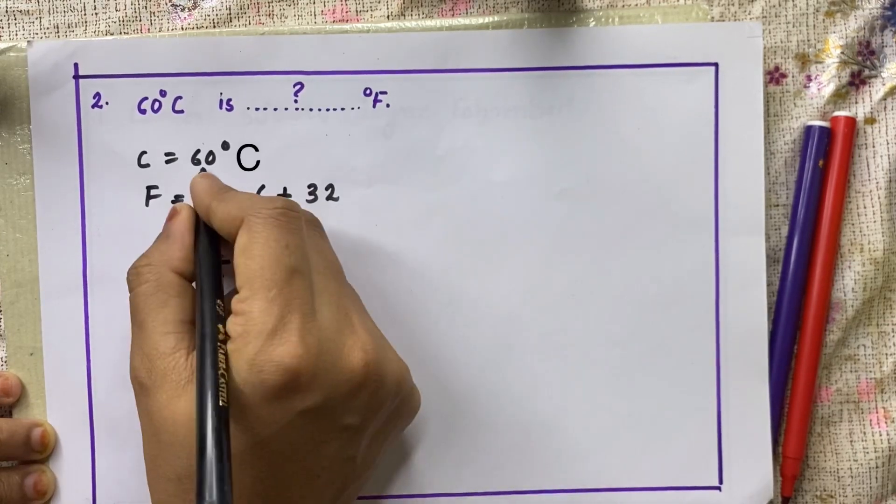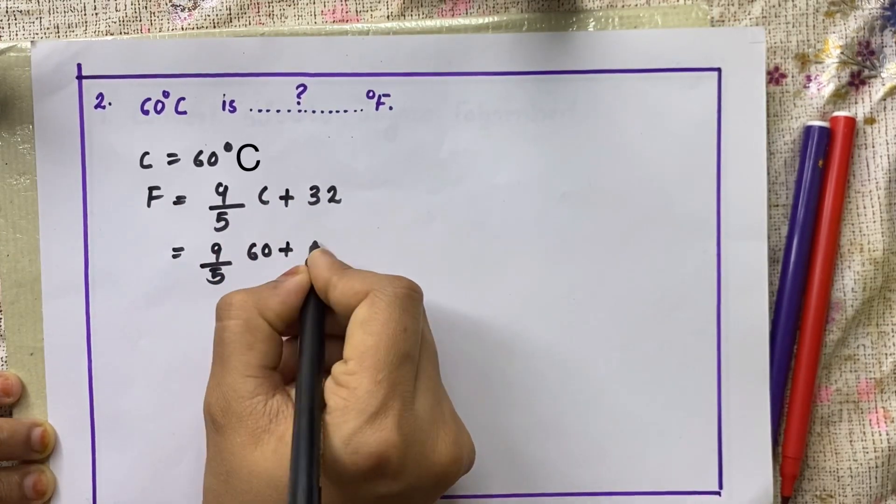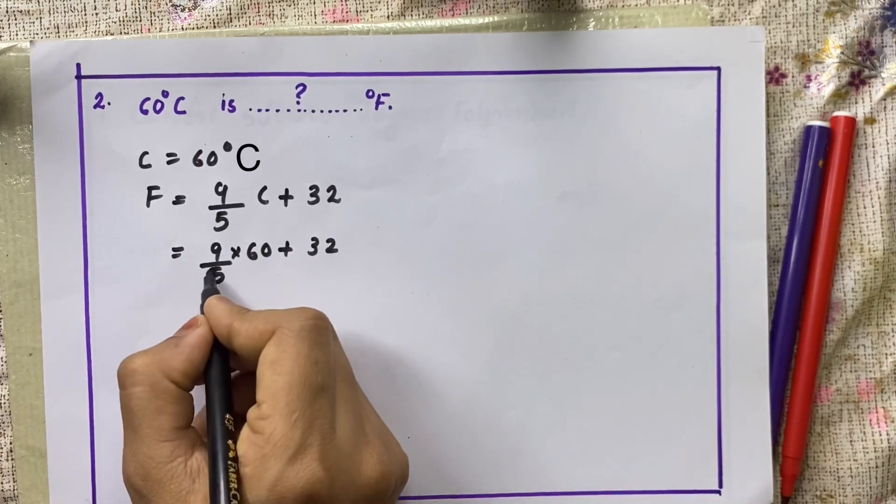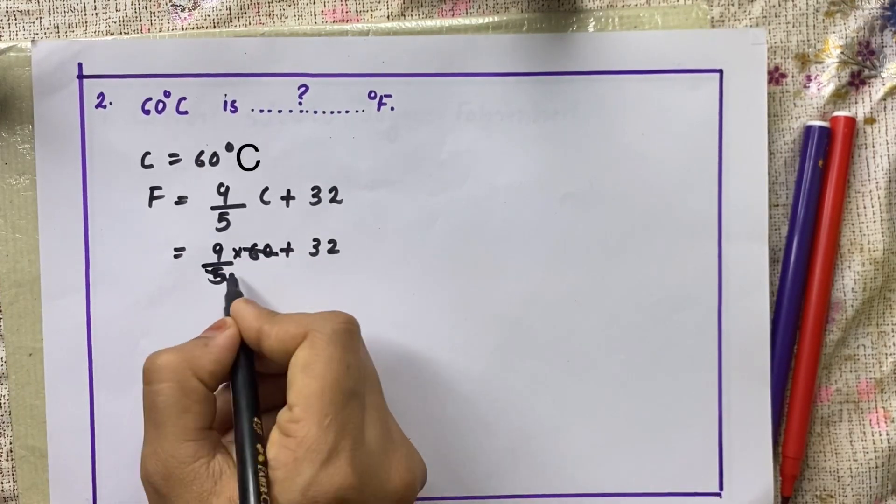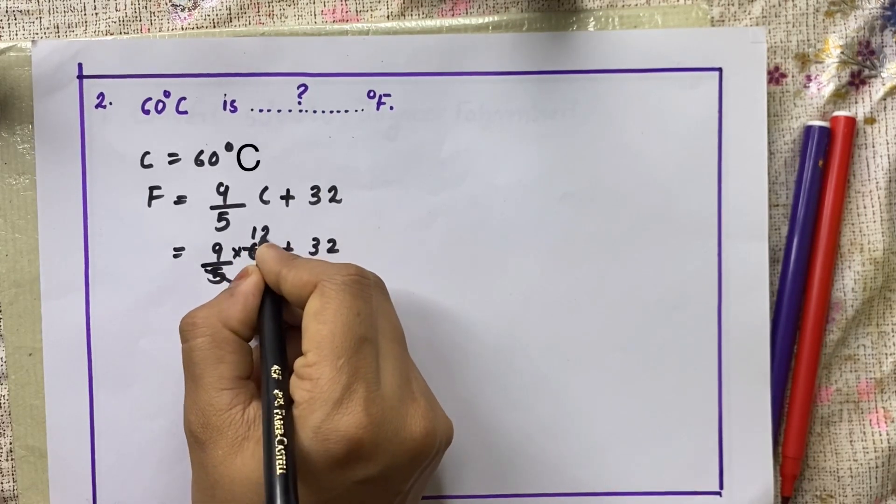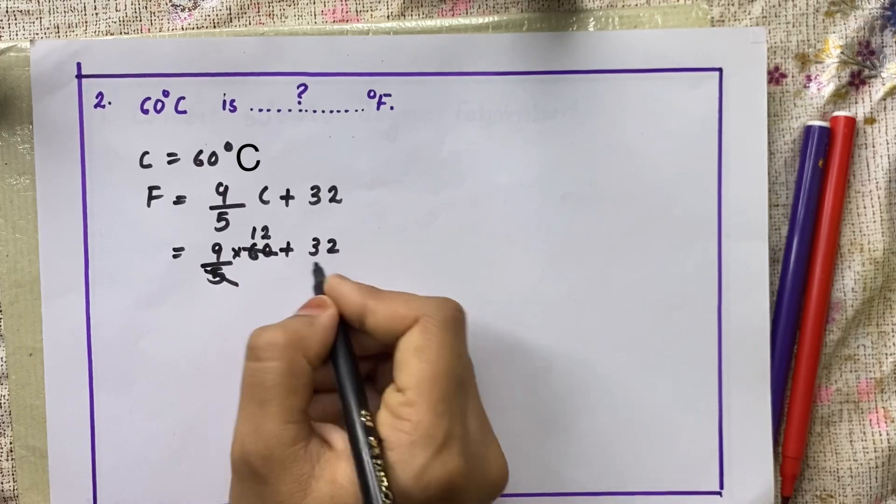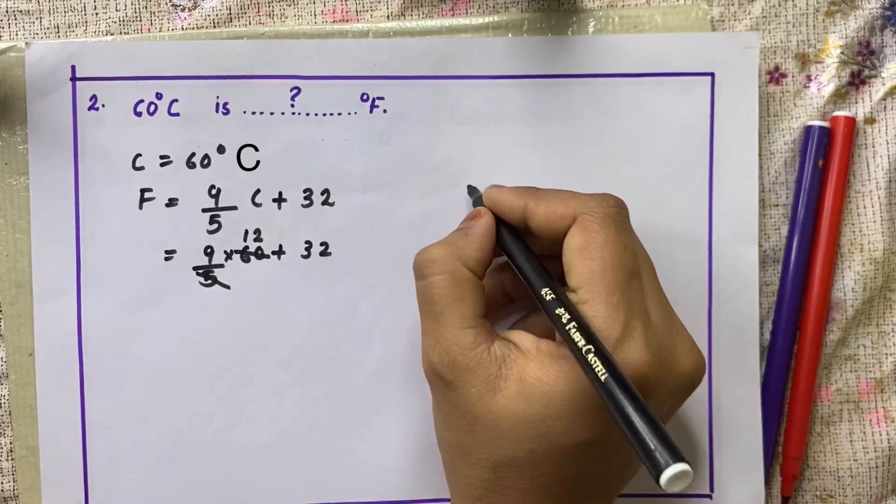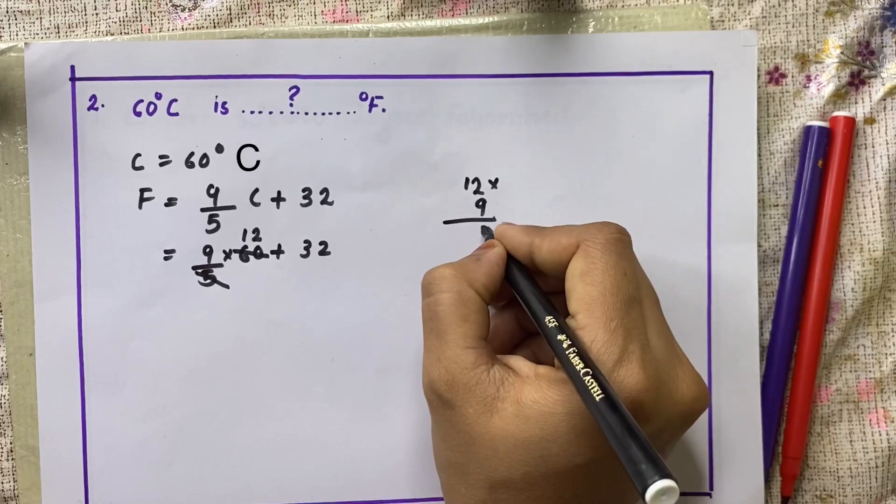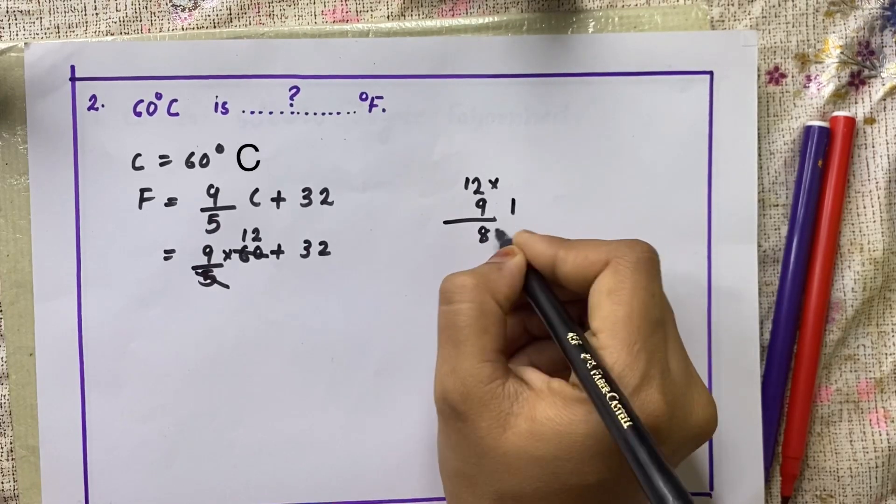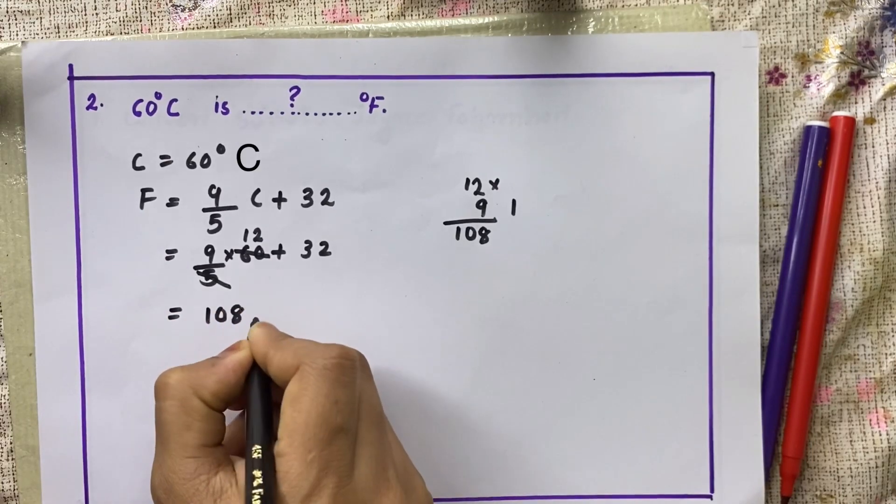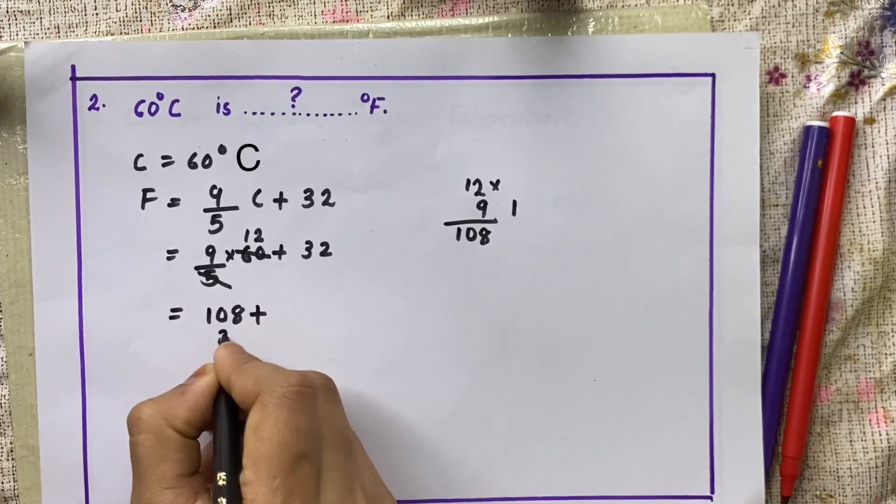9 by 5, what is C? 60 plus 32. Here it is multiplication, so we can cut 5 into how much is 60? 12 into 5 is this much, so we can multiply 12 into 9. 18, 10. That is equal to 108 plus remaining is 32.